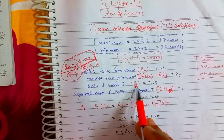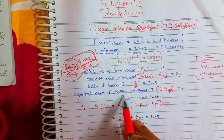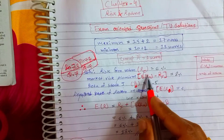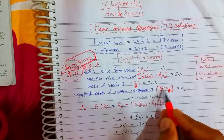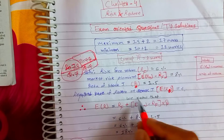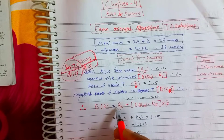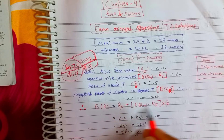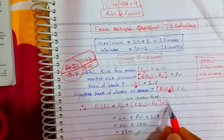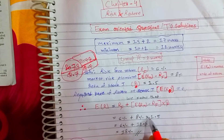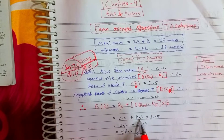Beta equals 1.5. Required rate of return on Stock J: eR = risk-free return plus market risk premium × beta = 6% plus 8% × 1.5.